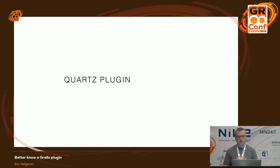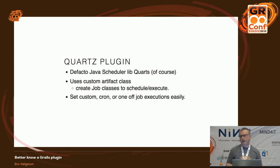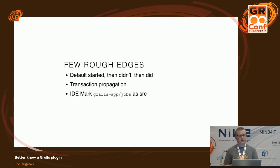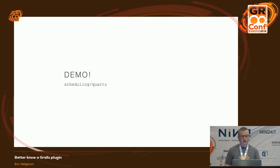For more advanced scheduling, Quartz is the enterprise scheduler — the de facto choice for advanced options. Grails has a Quartz plugin that creates a custom artifact ending in 'Job' in the grails-app/jobs directory. You can schedule almost anything and handle errors. There are a few rough edges on Grails 3: transaction propagation is handled differently, and IDE integration sometimes doesn't work exactly right, but it's easy to fix by marking it as source.